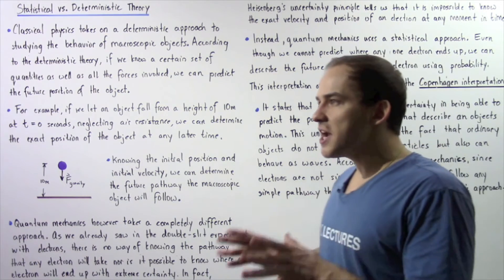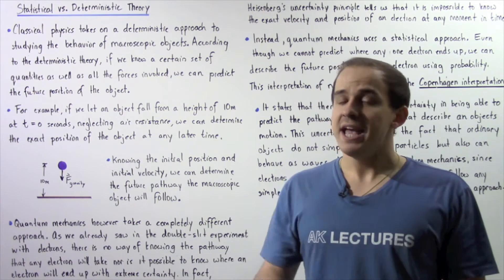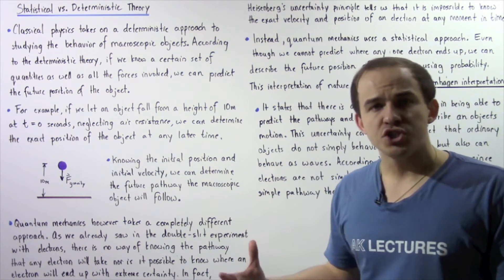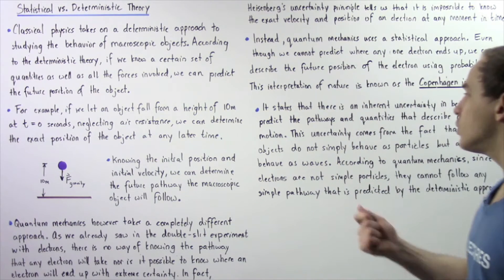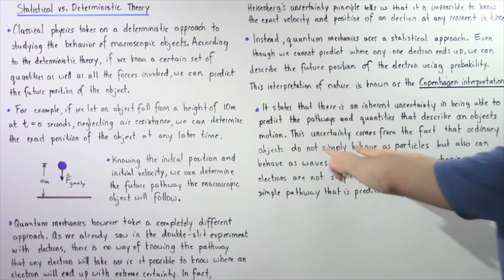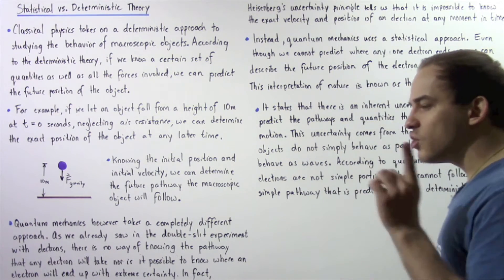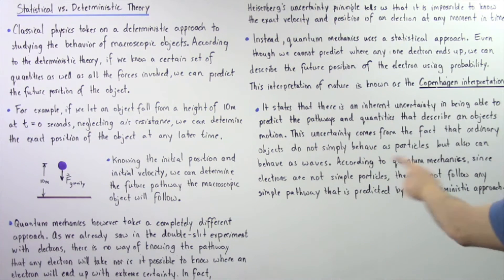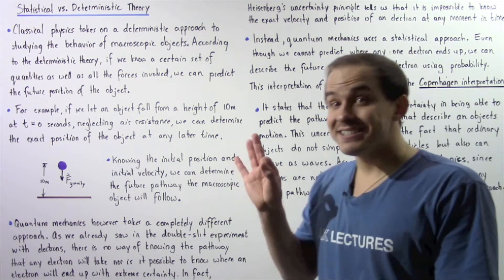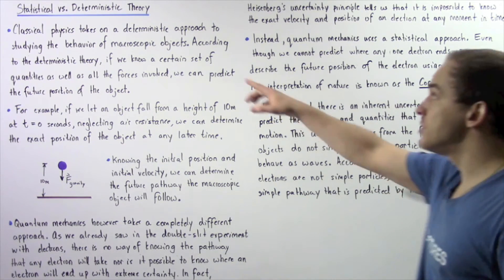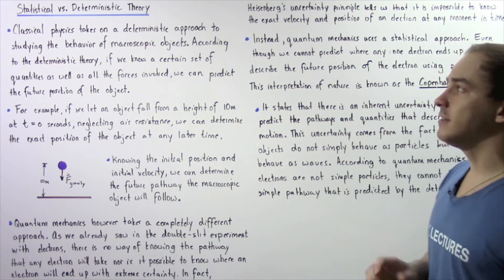Copenhagen's interpretation states that there is an inherent uncertainty in being able to predict the pathways and quantities that describe the motion of any object, whether microscopic or macroscopic. This uncertainty comes from the fact that ordinary objects do not simply behave as particles, but can also behave as waves. According to quantum mechanics, since electrons are not simple particles and can also act as waves, they cannot follow any simple pathway predicted by the deterministic approach of classical physics.